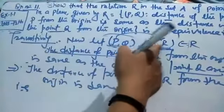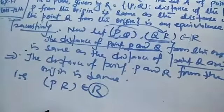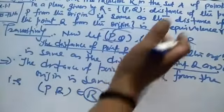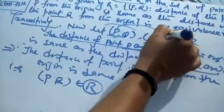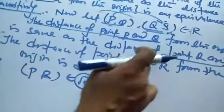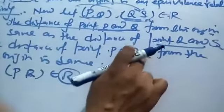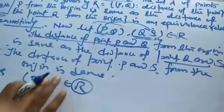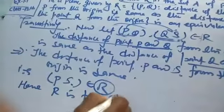To make it clearer, we can rename the variables — instead of R we can use S or T, it doesn't matter. If we make it QS, then PQ and QS gives us that the distance of point P and S from the origin is the same, so PS belongs to R. Hence R is transitive.